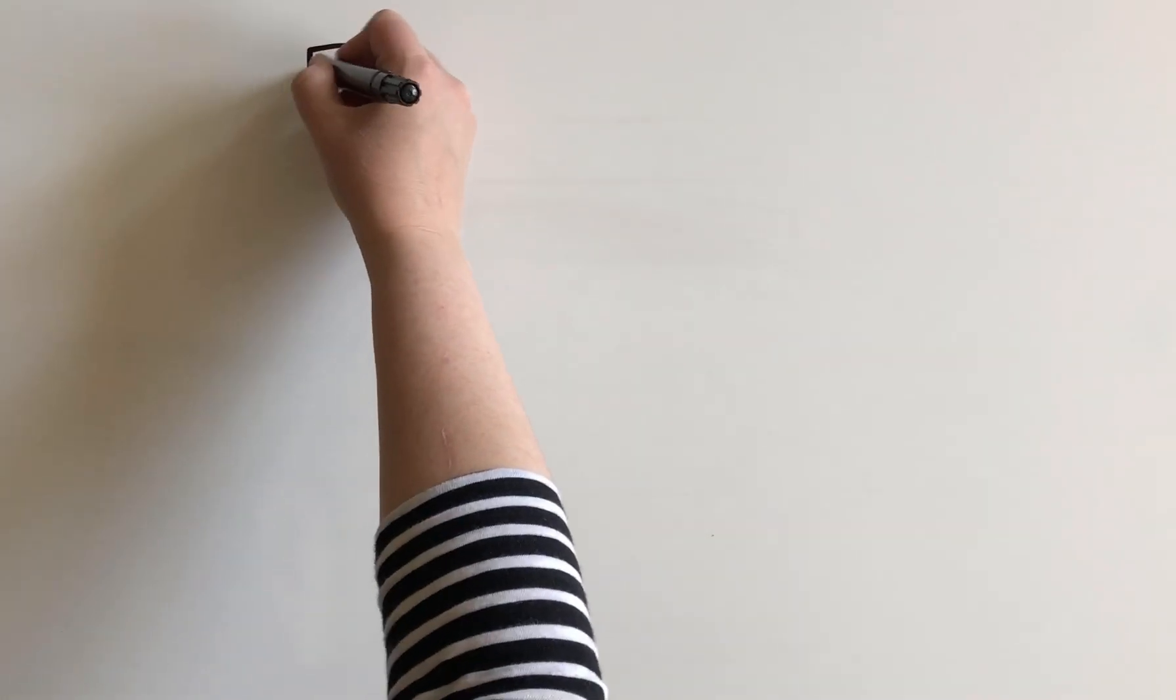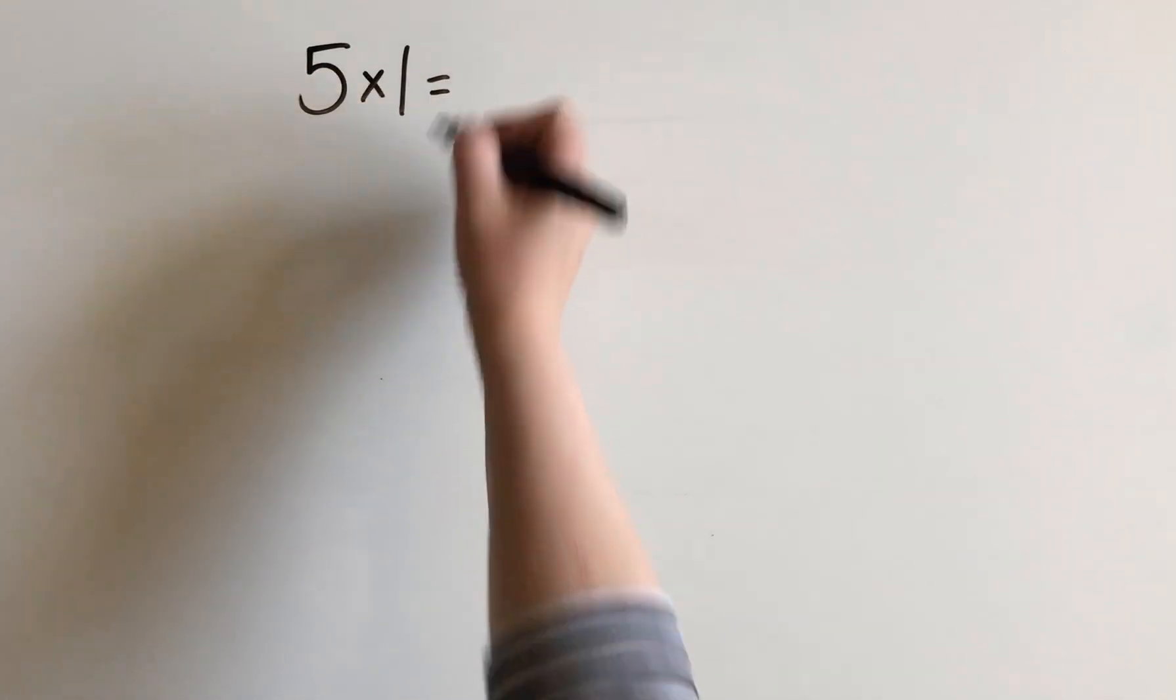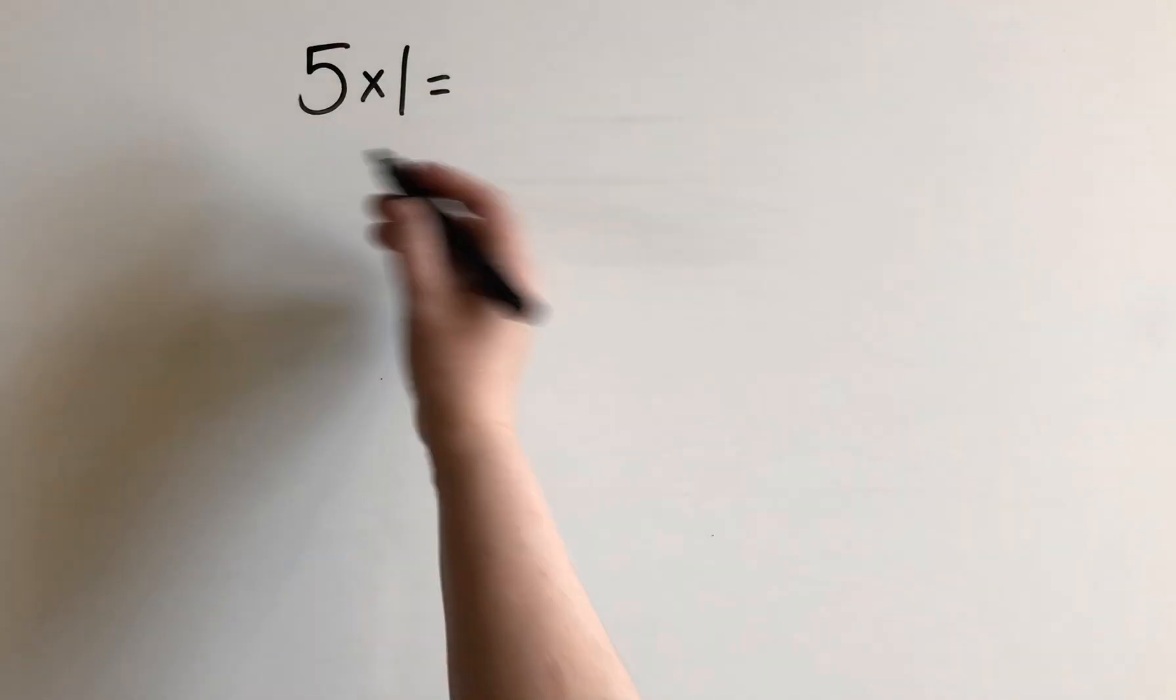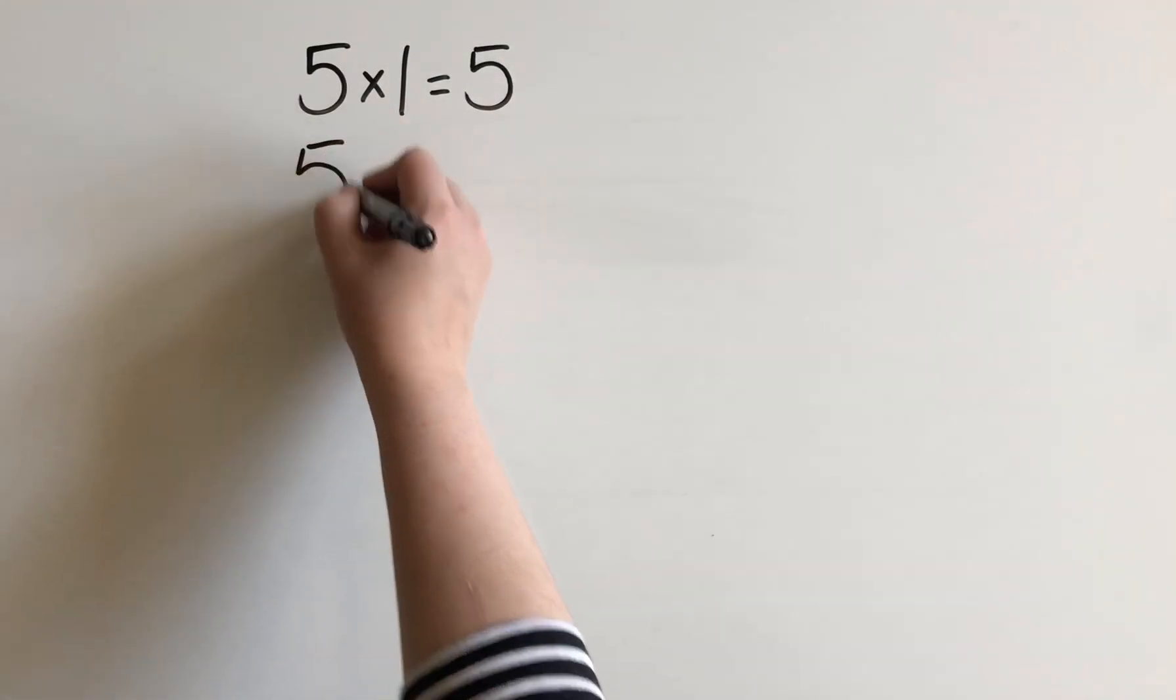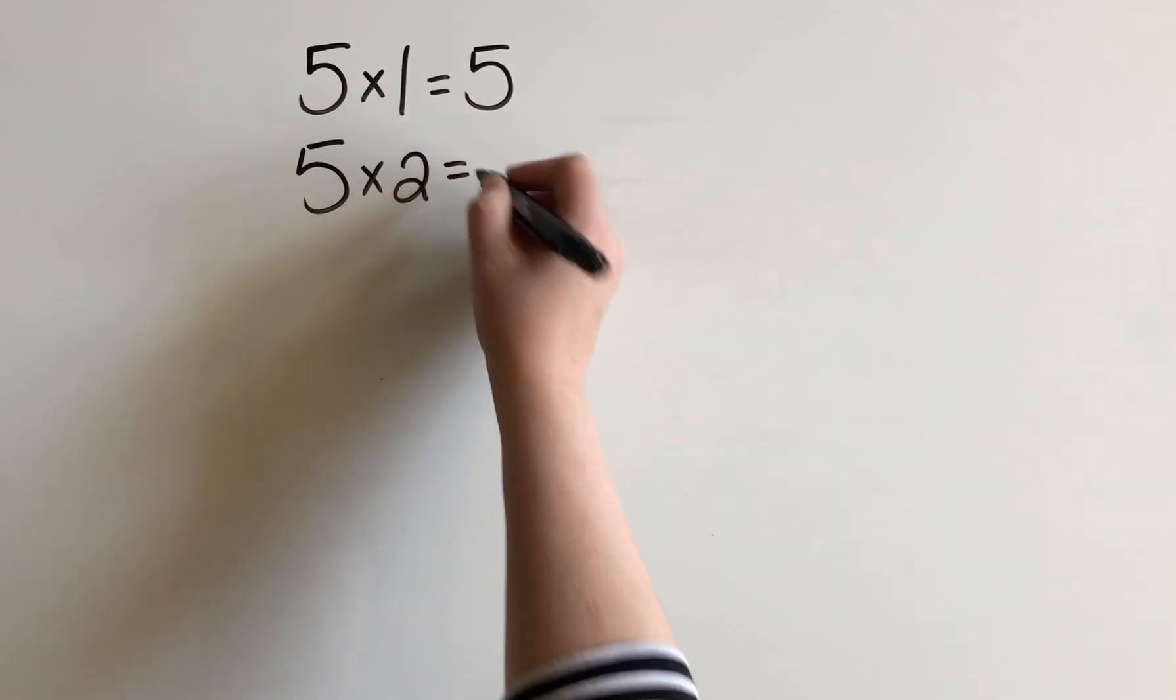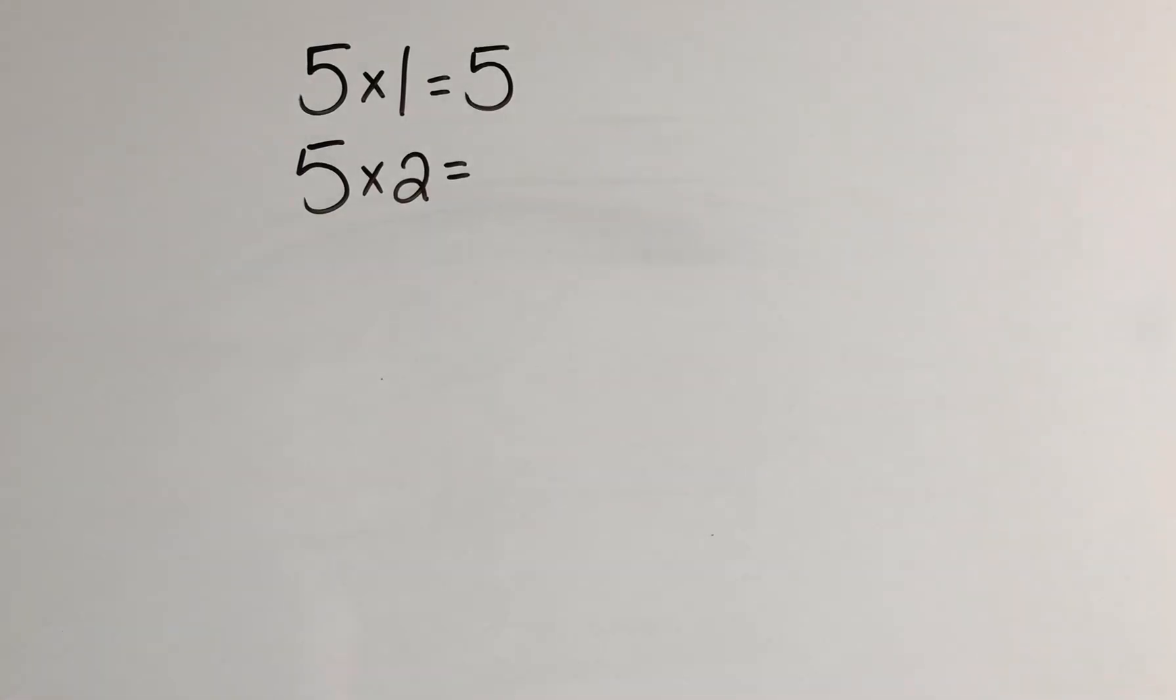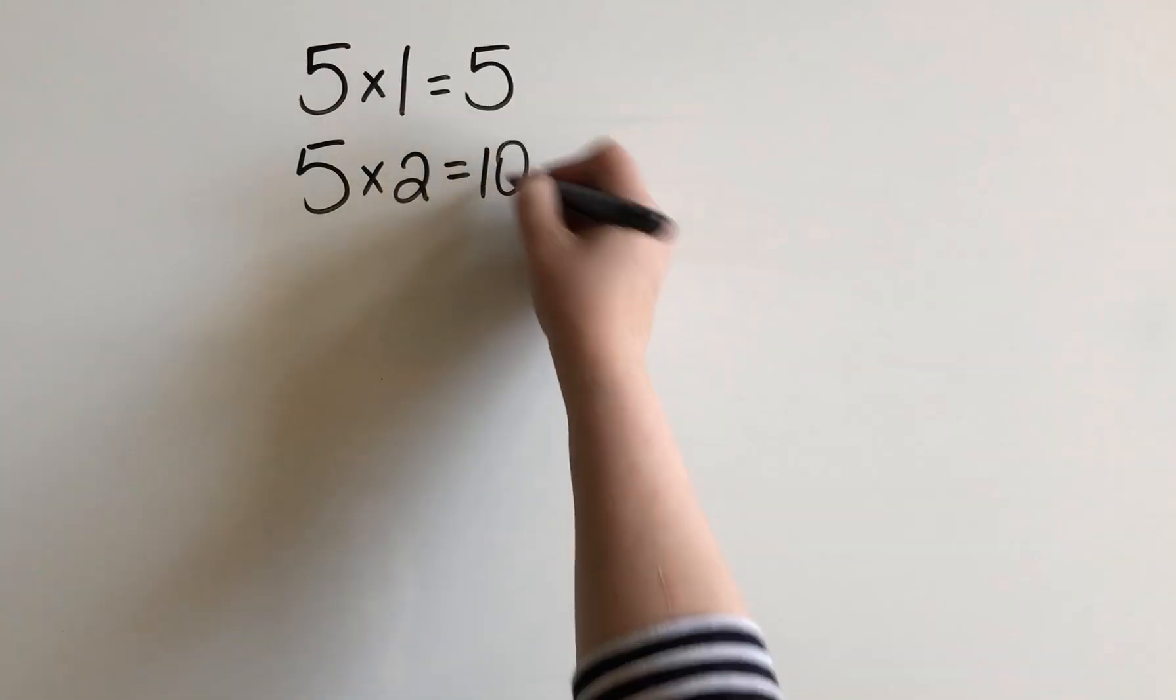So let's go through the facts. Now 5 times 1, we're not going to use this strategy because 5 times 1 is pretty simple. We know that that's 5. Okay, let's do 5 times 2. We could take 10 times 2 to make 20. And then half of that gives us 10.